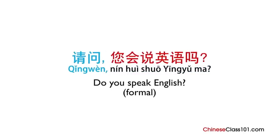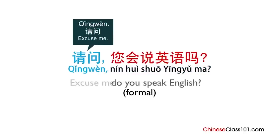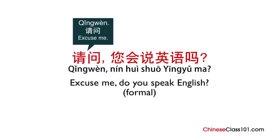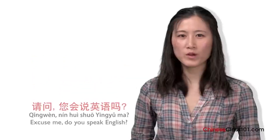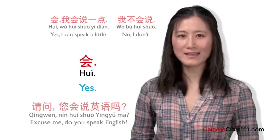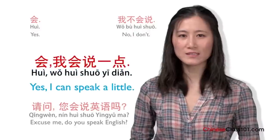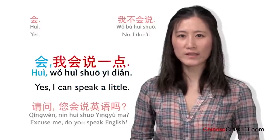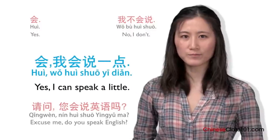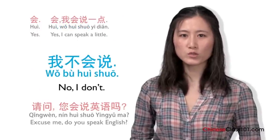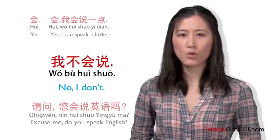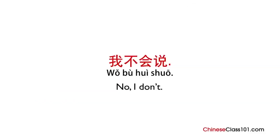Adding 请问 makes the sentence even more polite — it means something like 'excuse me.' All together: 请问,您会说英语吗? The responses you will receive could be: 会 — yes. Or 会,我会说一点 — yes, I can speak a little. Or 我不会说 — no, I don't. Since the last one is a negative statement, we need to say the negative word 不 before the verb 会.